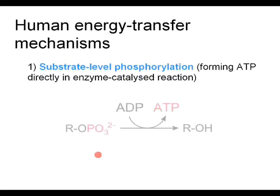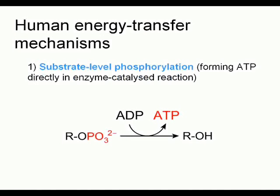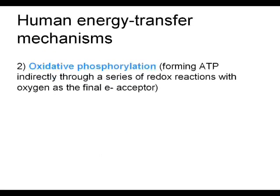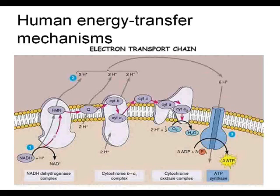As you can see, ADP, which is adenosine diphosphate, takes a phosphate group directly and turns into ATP, which is adenosine triphosphate. The second mechanism is oxidative phosphorylation, where ATP is formed through a series of redox reactions where oxygen is the final electron acceptor. The formation of ATP here takes place in the final stage of metabolism, which is the electron transport chain.